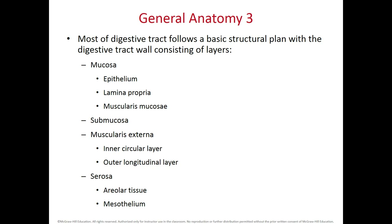As their names imply, the fibers of the inner circular layer run circularly or around the tract, and the fibers of the outer longitudinal layer run parallel or longitudinally to the gastrointestinal tract. The last and most external layer is called the serosa, which has areolar connective tissue covered by a mesothelium membrane made of peritoneum in the case of the abdominal cavity, though it is different in the esophagus.